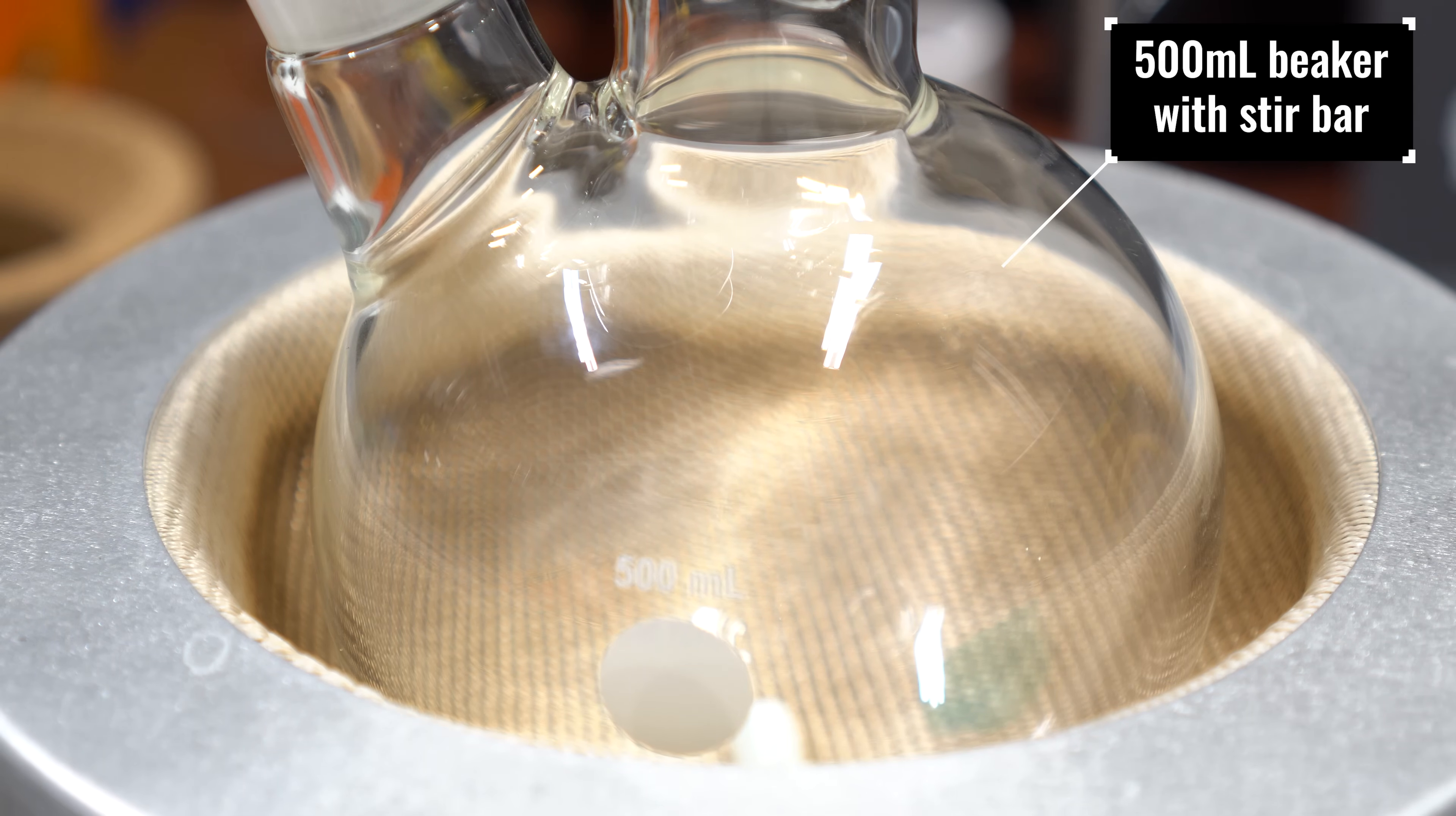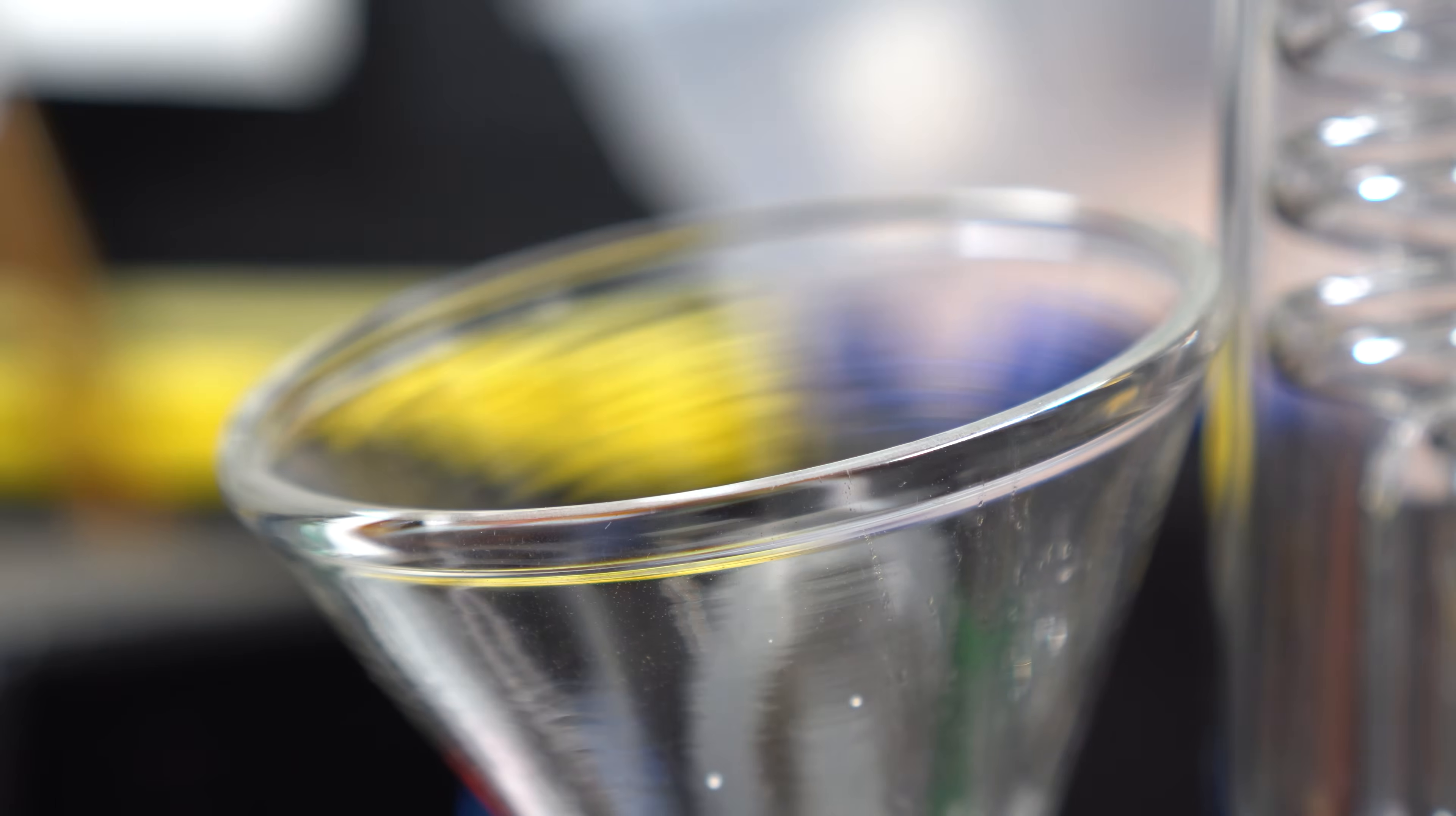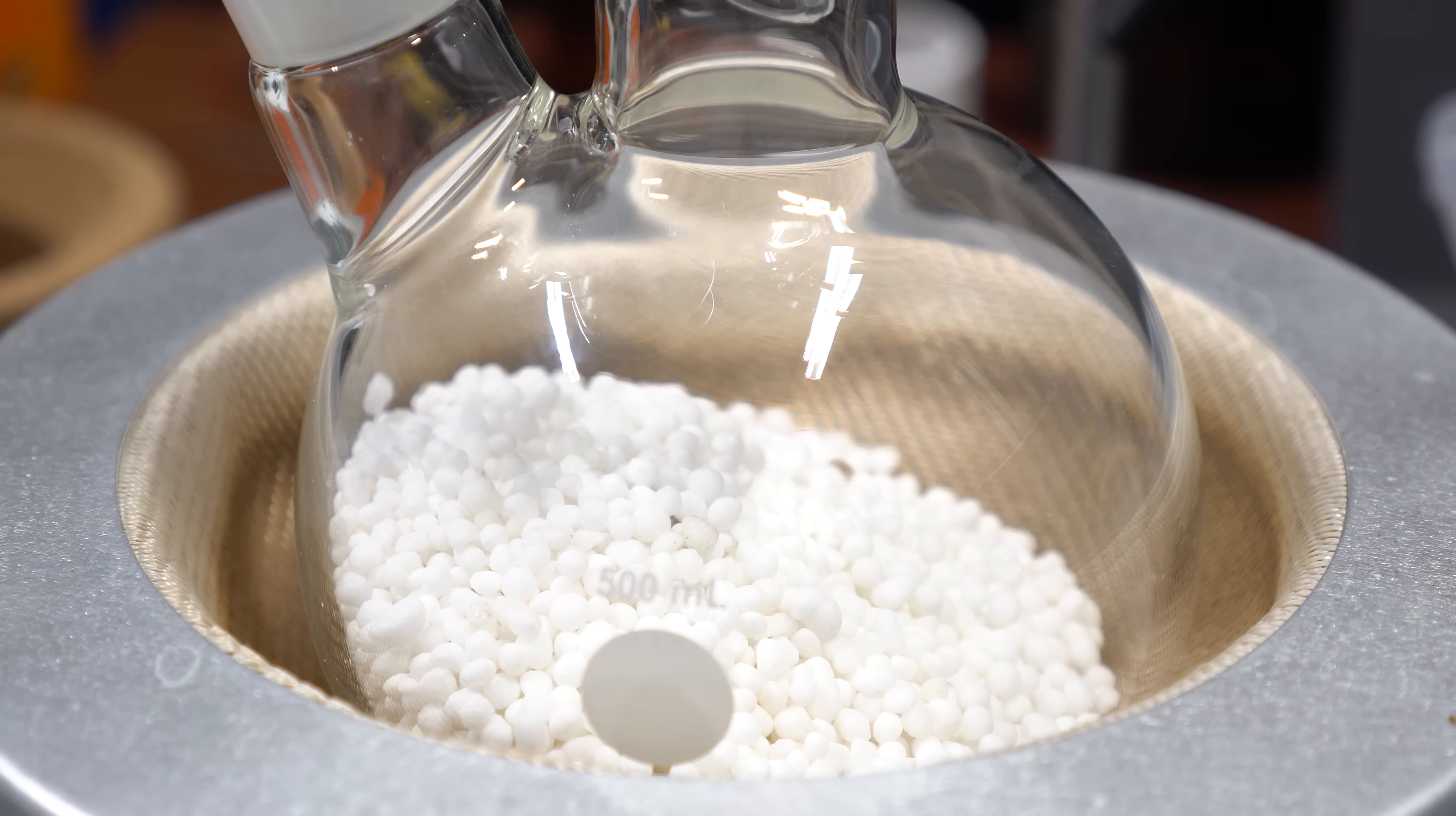To start, we're going to need a 500ml beaker with a stir bar inside. We need an ammonia source, so I'm going to be reacting urea and sodium hydroxide together. I added 120g of sodium hydroxide into the flask, then 90g of urea. I'm not going to add the water yet until I have my dry ice bath set up.